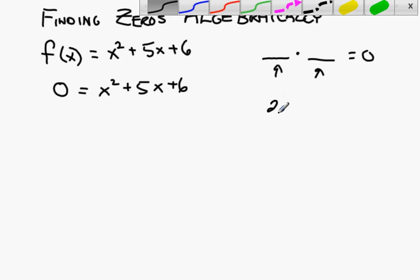For instance, if I told you two times something equals zero, you know that this would have to equal, if say that was x, you know then that x would have to be equal to zero.